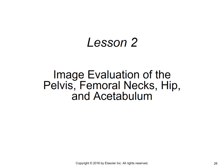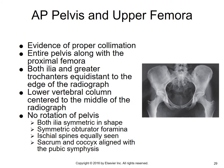For image evaluation of the AP pelvis: good collimation is needed with the entire pelvis and proximal femora visible — you can't clip the iliac crest or the hip area. Both ilia and greater trochanters should be equidistant to the edge of the radiograph, and the lower vertebral column should be centered in the middle. One of the biggest things to check is that the pelvis is not rotated — if one iliac wing appears smaller than the other or the obturator foramina are not symmetric, there is rotation.